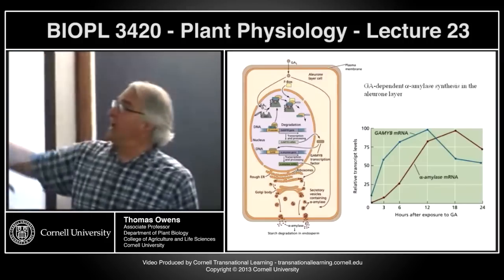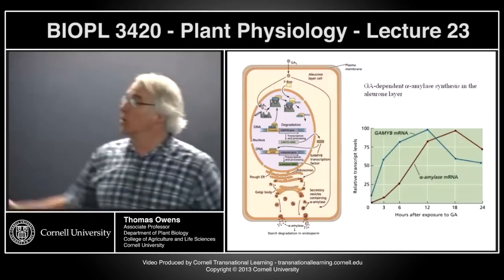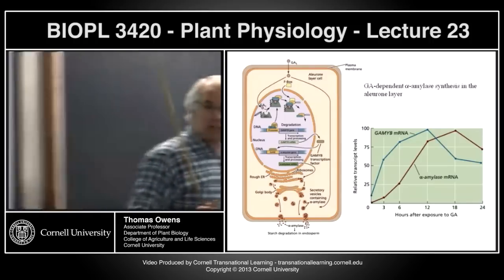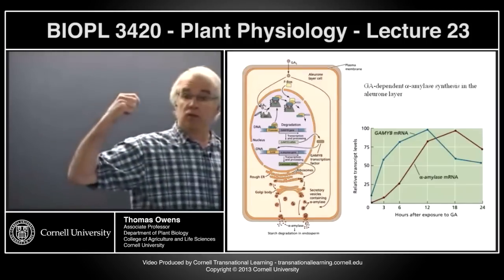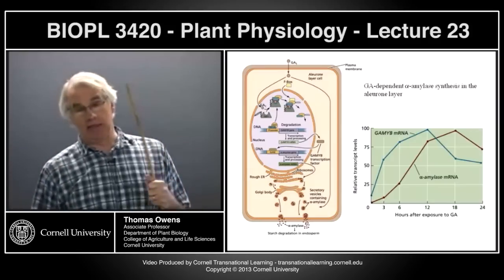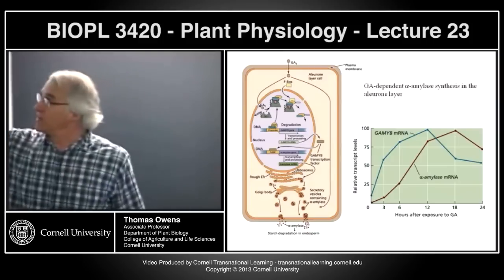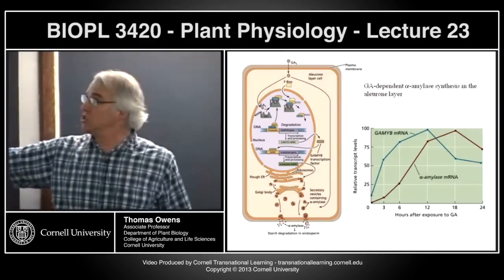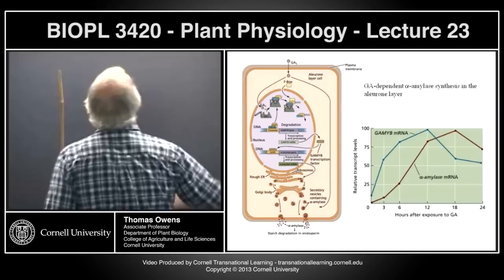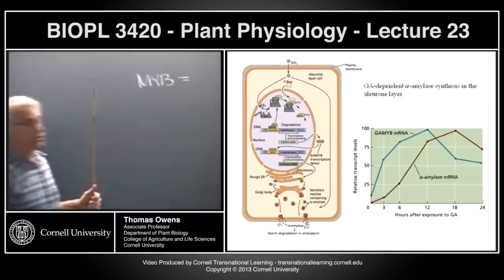In the presence of GA, the DELLA protein is tagged with ubiquitin and broken down, which frees up the promoter to permit the transcription of the early genes — the genes that are being made immediately in response to the addition of gibberellic acid. What this early gene encodes is GA-MYB, the MYB proteins.